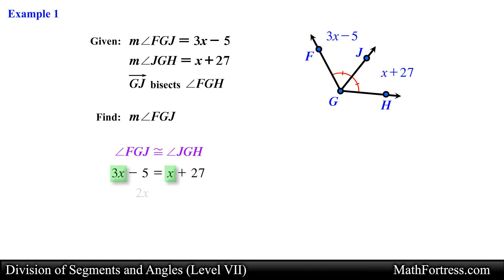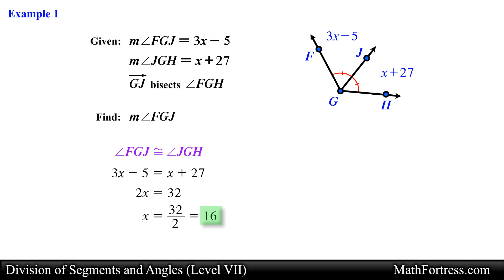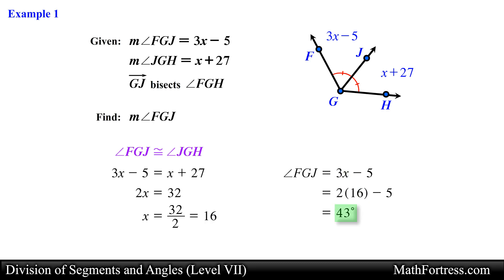Now we can solve for x. We first subtract x from both sides of the equation, then add 5 to both sides, and finally divide both sides by 2 and simplify — obtaining x equals 16. The last step is to substitute this value of x into the algebraic expression representing the measurement of angle FGJ. Doing that and simplifying, we obtain 43 degrees as the final answer.